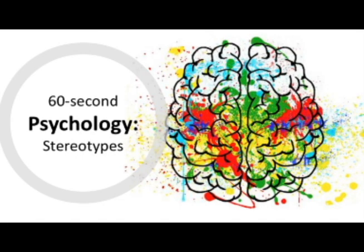Stereotypes are learned through social learning theory, meaning we essentially inherit stereotypes from observing and imitating people's existing stereotypes, such as racial or gender stereotypes.